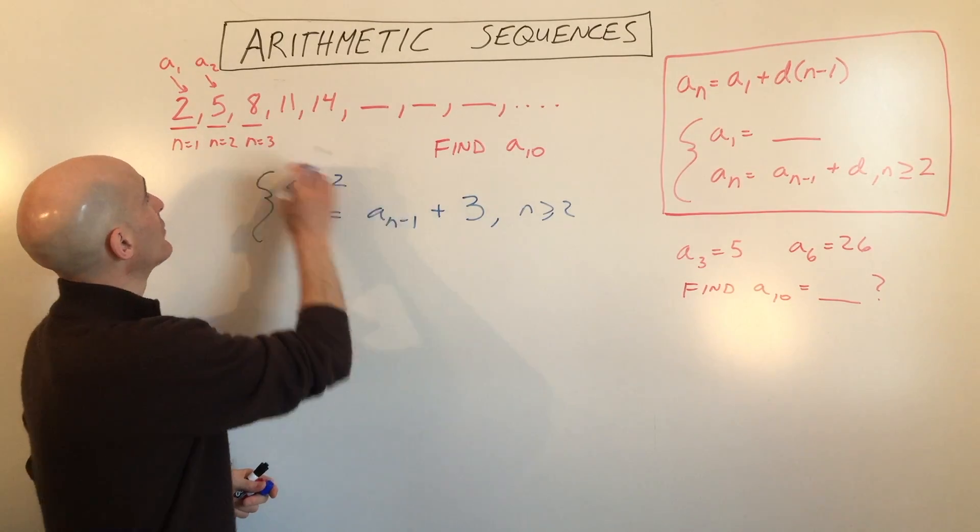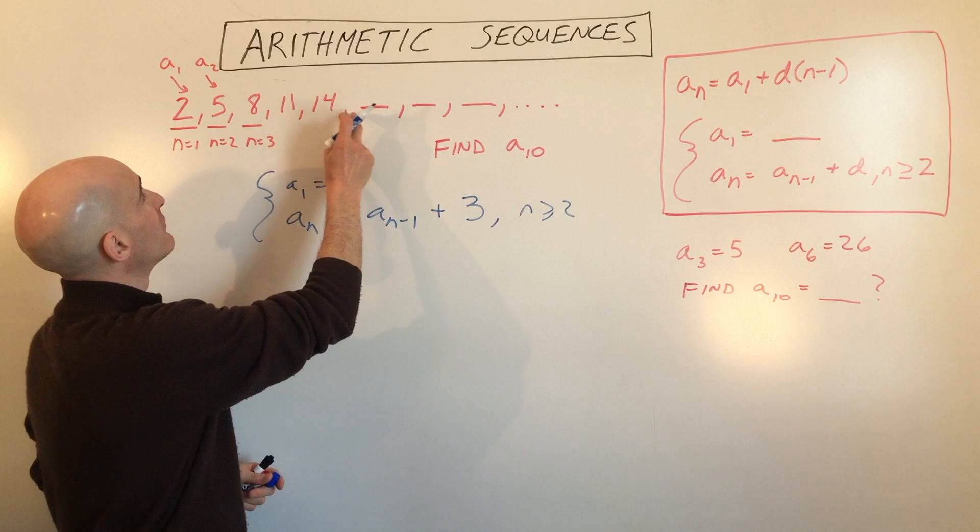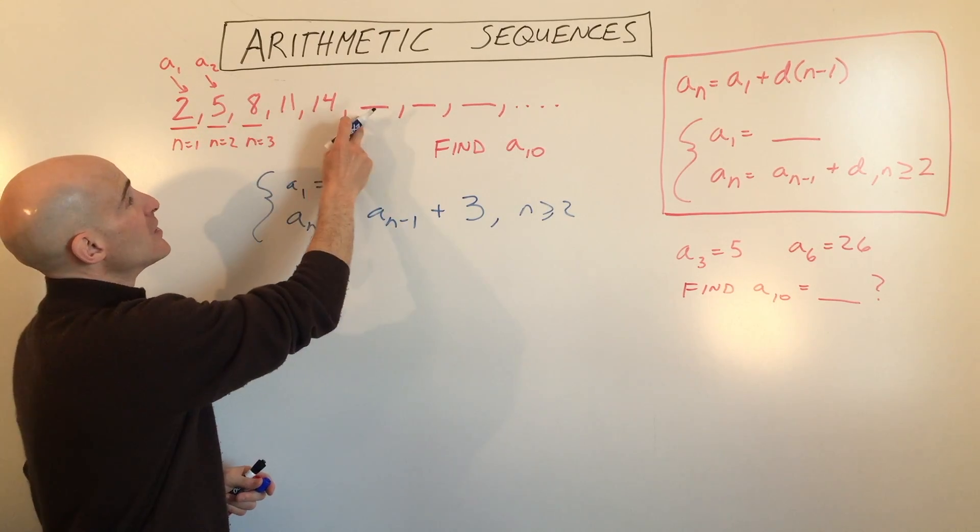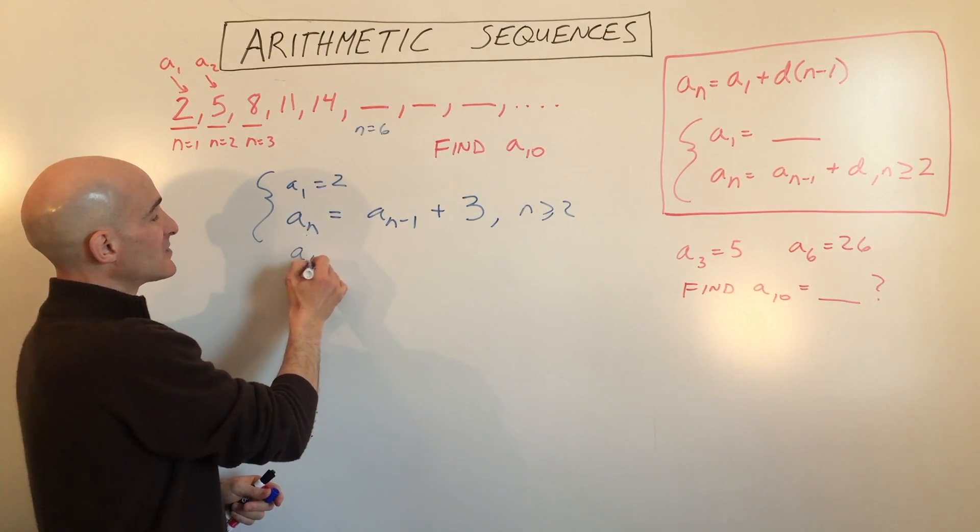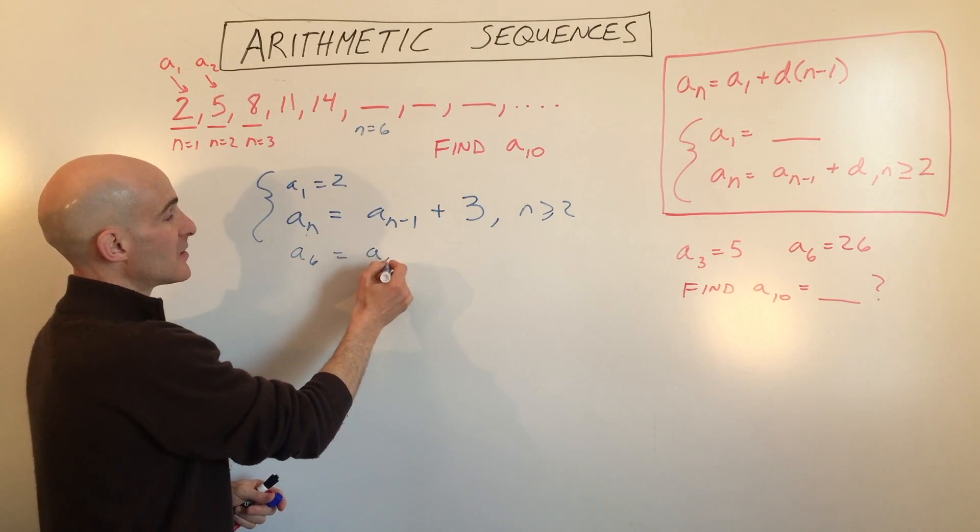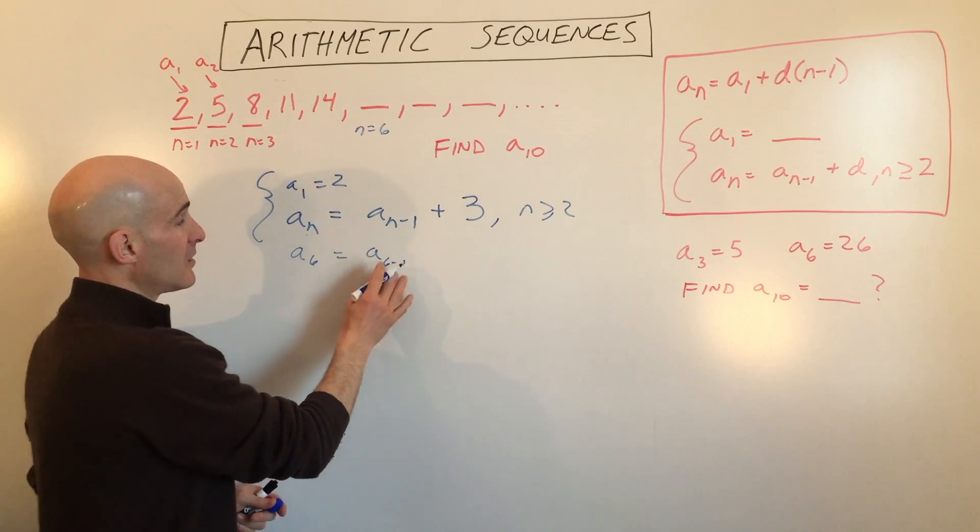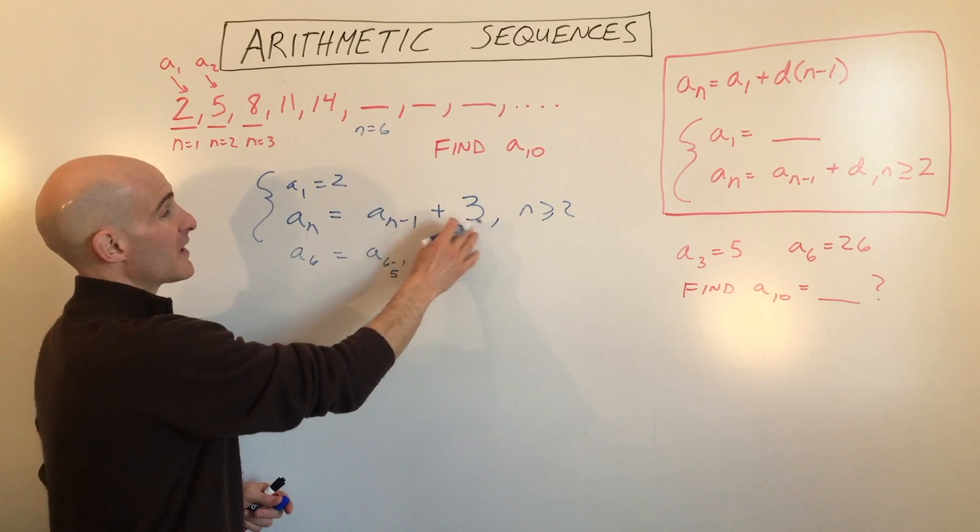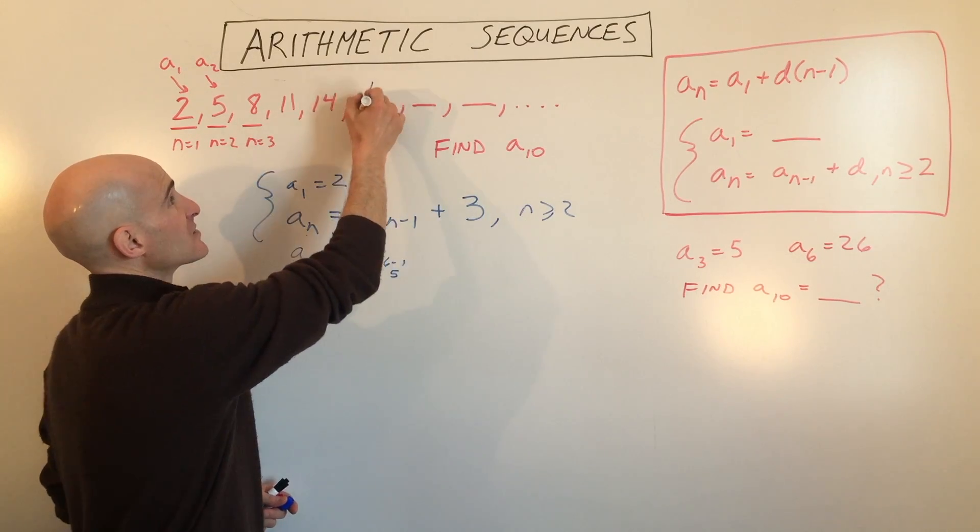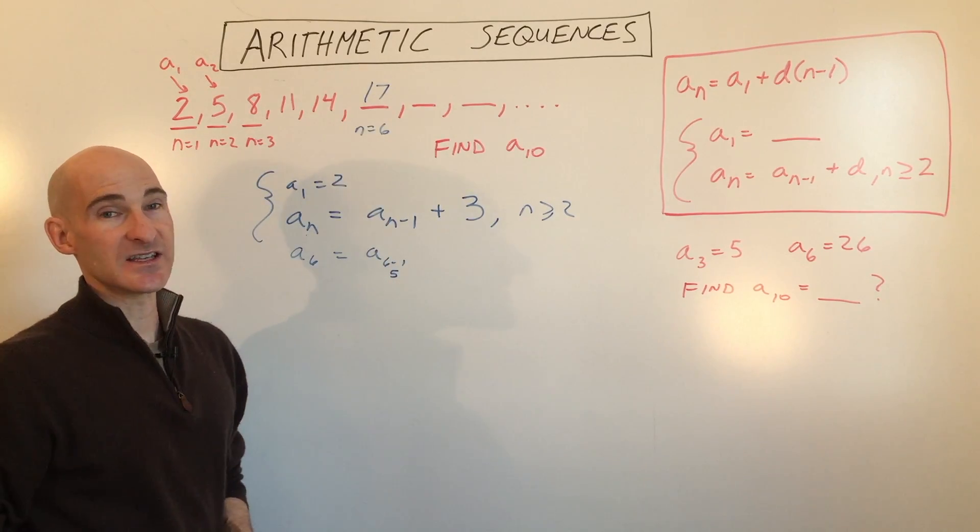say we want to find out the 1, 2, 3, 4, 5, 6th term. So here's n equals 6. If we want to find a sub 6, we go to the a sub 6 minus 1, which is going to be the 5th term, which is the one before it, and we're going to add 3, and that's going to take us to 17.